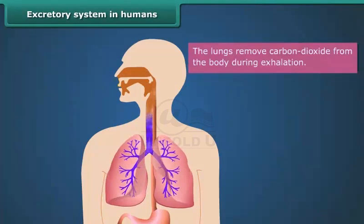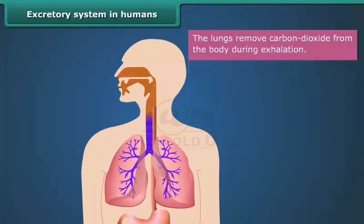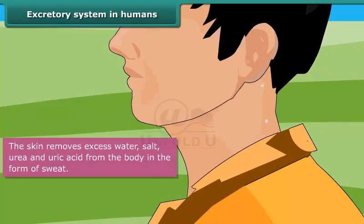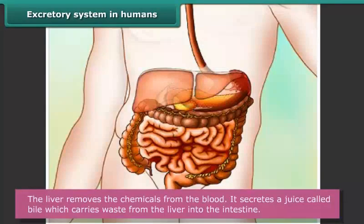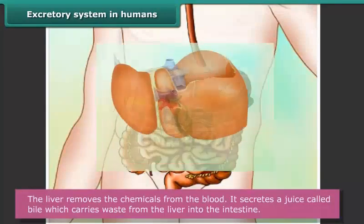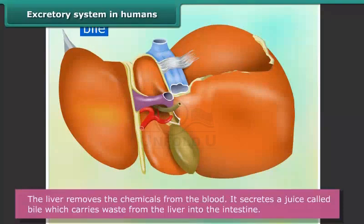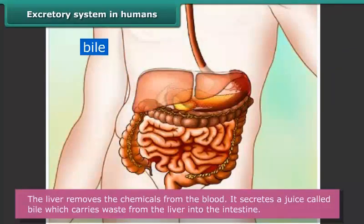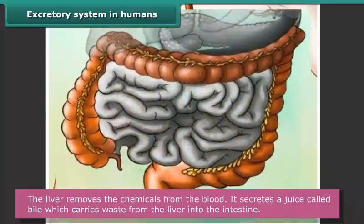The lungs remove carbon dioxide from the body during exhalation. The skin removes excess water, salt, urea, and uric acid from the body in the form of sweat. The liver removes chemicals from the blood and secretes a juice called bile, which carries waste from the liver into the intestine.